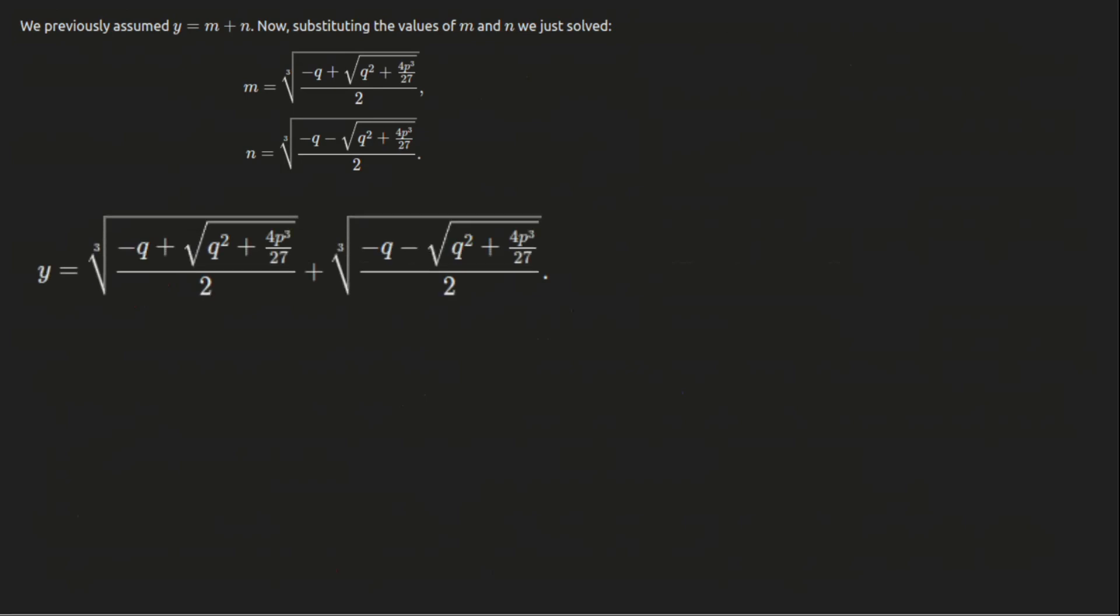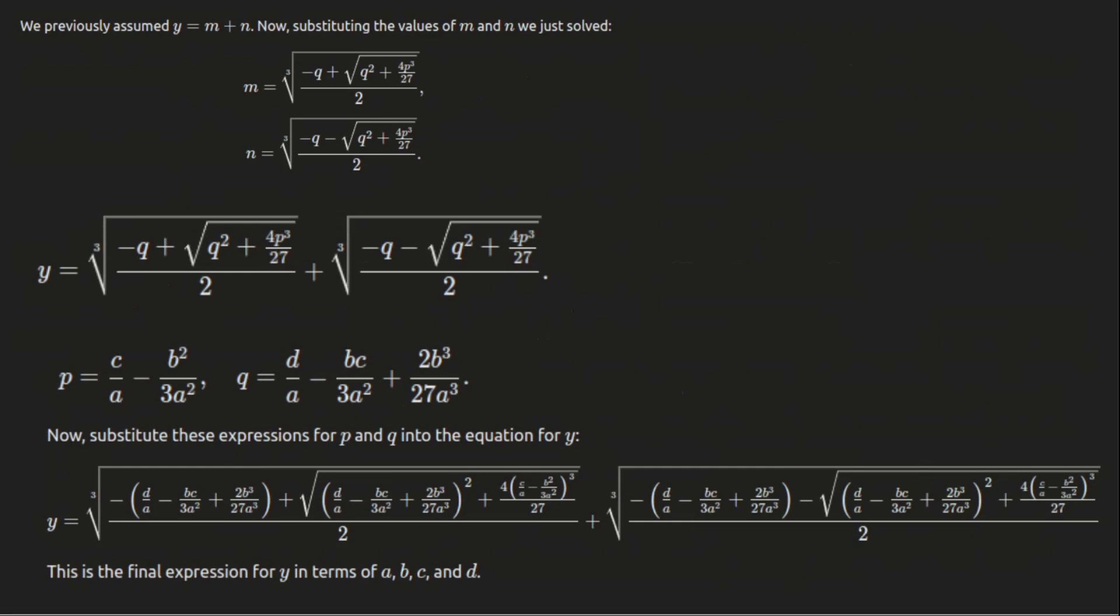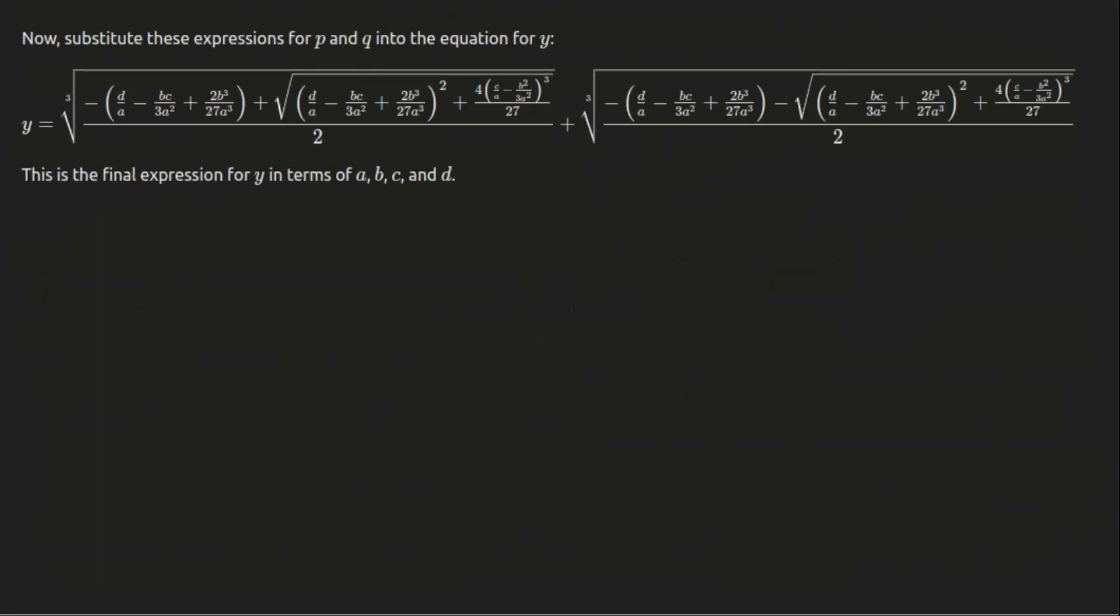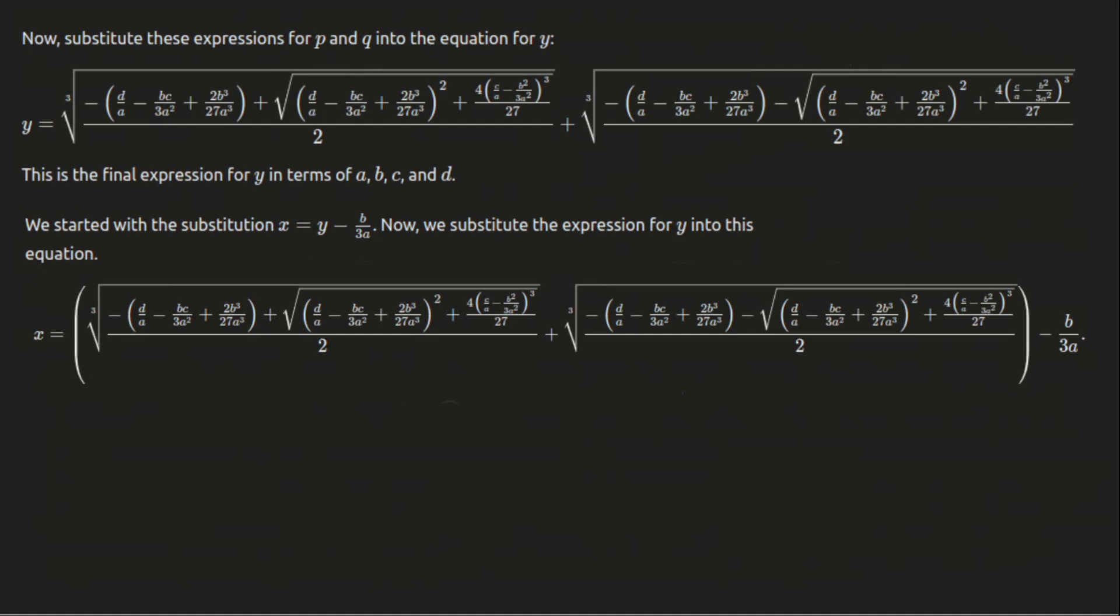Then we shift back to x by substituting x = y - b/(3a), which gives us the first root x₁. So the first root x₁ is the sum of these cube roots minus b/(3a).